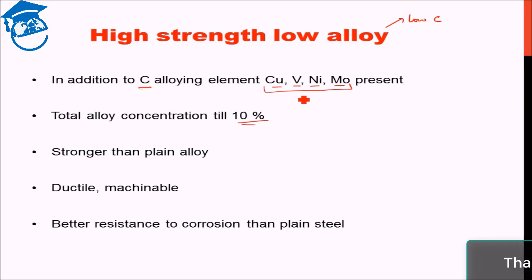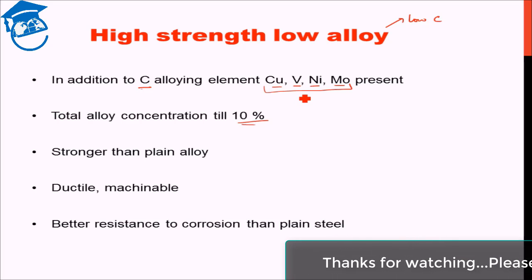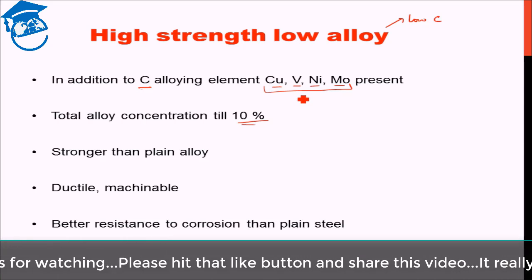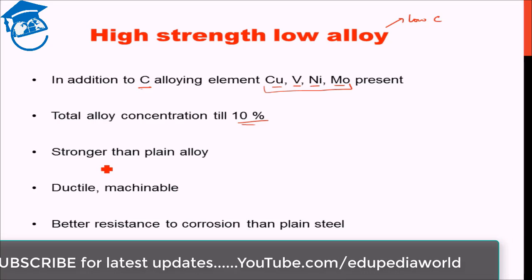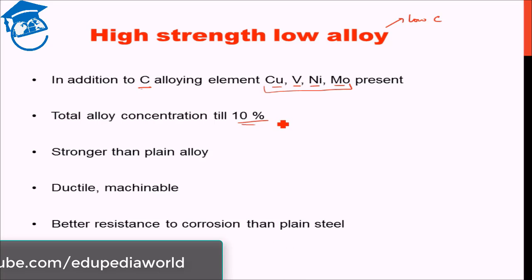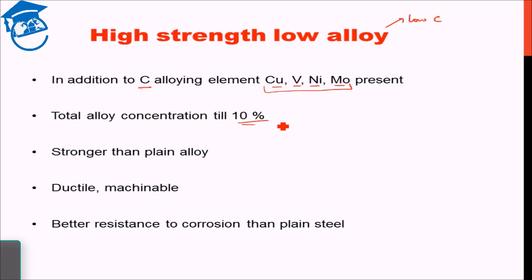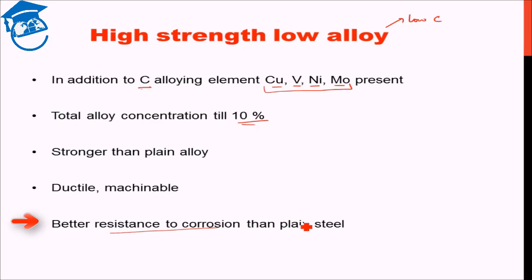HSLA steel remains ductile and machinable because the carbon content is really, really low. So though the strength increases, it does not compromise much with the ductility of the material. The additional alloying elements also have an added advantage: they increase the resistance to corrosion. High-strength low-alloy steel has better resistance to corrosion than plain carbon steel. However, the need to add additional alloying elements, which can be expensive, means economic factors come into play when choosing between plain carbon steel and HSLA steel.